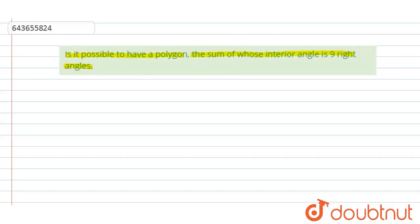First of all, we will use the formula in this question which gives the sum of all interior angles in a polygon, and that is equal to (n - 2) × 180°. This is the formula to find the sum of all the interior angles in a polygon, where this small n is nothing but the number of sides.